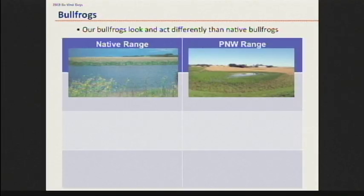Finding bullfrogs in wetlands that dry up at the end of summer is a major problem — that's where our native amphibians go to breed. Overlap is much higher if they're moving to these ephemeral systems, and we've significantly expanded bullfrog habitat. We can also find tadpoles that metamorphose in one season here, which doesn't happen back in the native range except for a couple of populations down in Texas.